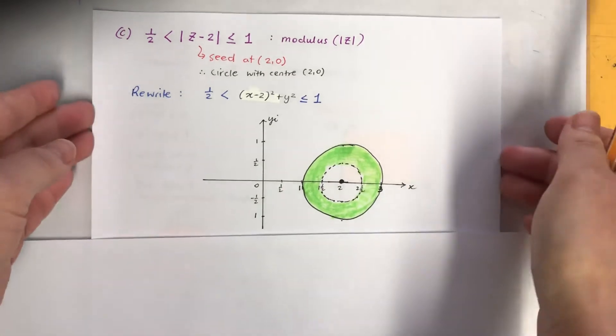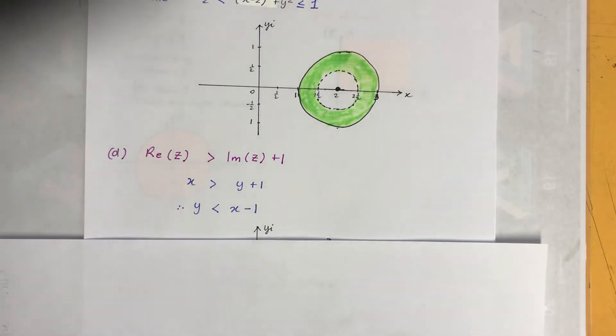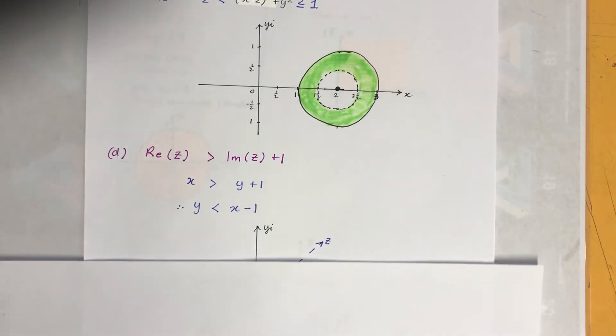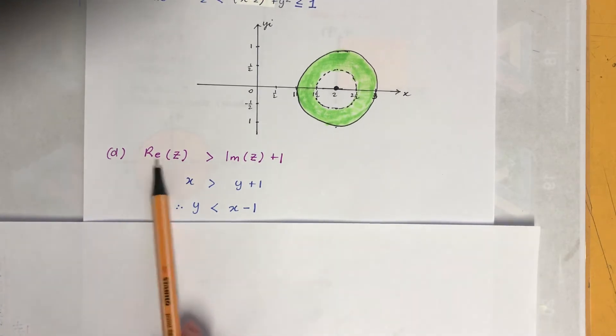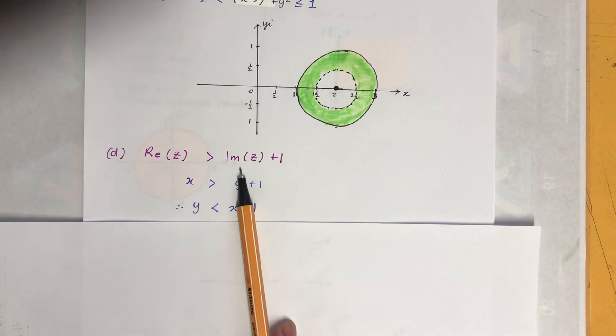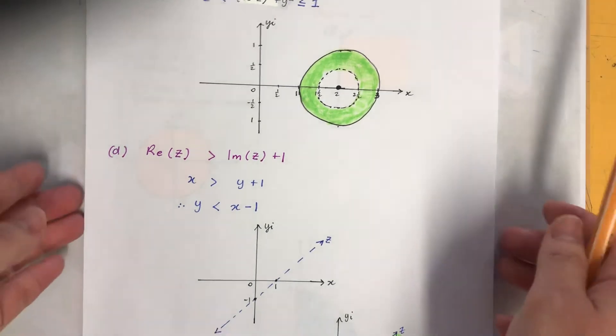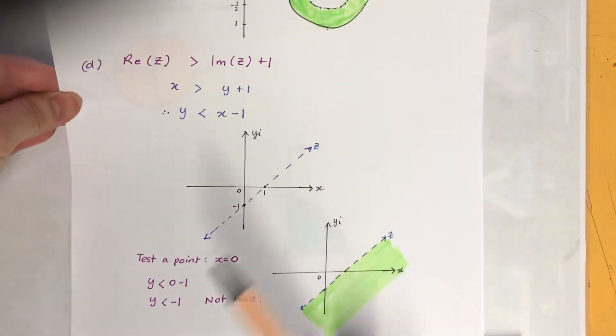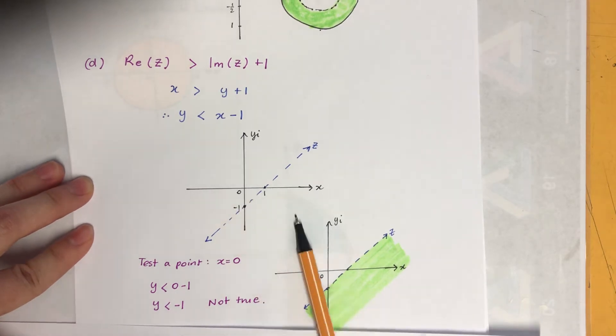The next one, it's a little bit unusual but it's not too bad. Real part of Z, Z equals what, X plus Yi. What's the real? X. Imaginary part of the X plus Yi is Y. So it's actually a straight line. X intercept is one, Y intercept is minus one.